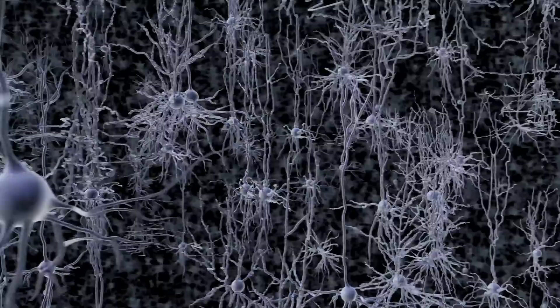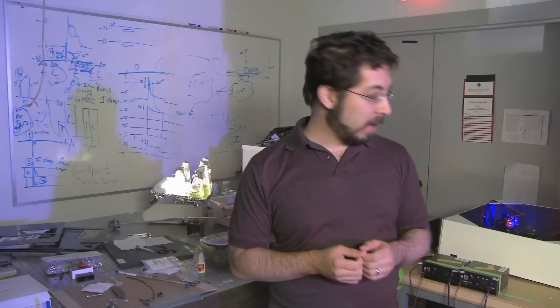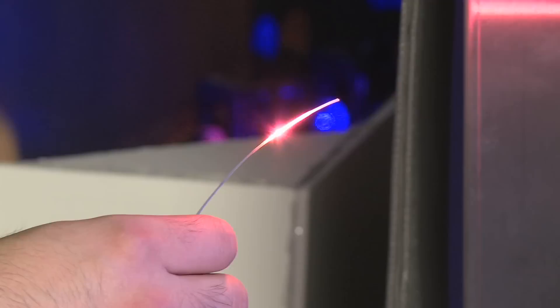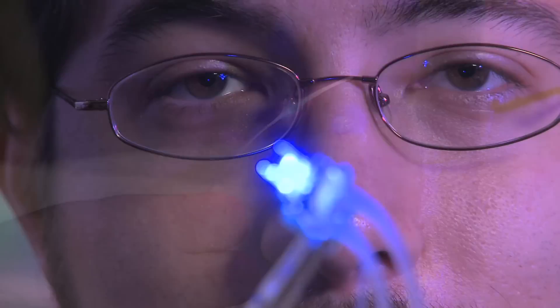Now MIT researchers are working to develop tools that allow us to do exactly that. It is now possible to precisely control the activity of specific neurons and therefore understand how each neuron contributes to brain function.